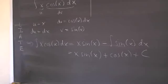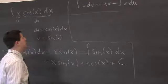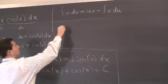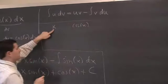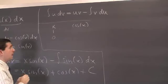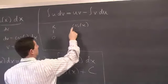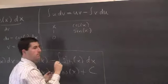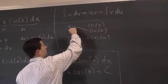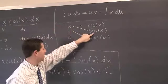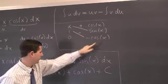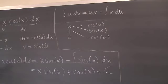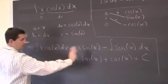On the other hand, you might notice this is one of those things where you have a polynomial and then a trig function or an exponential, so you can use the tic-tac-toe method. You write x over here, cosine of x over there, and differentiate until you get to zero. The derivative of x is 1, derivative of 1 is zero. Then you antidifferentiate as many times as you differentiate: the antiderivative of cosine is sine, and the antiderivative of sine is negative cosine.